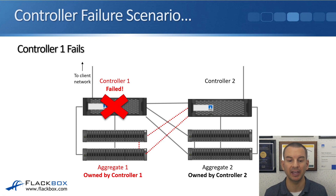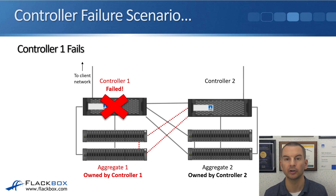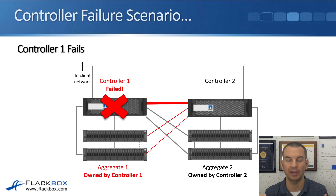Let's say we do have a failure event where controller one fails. Because it owns the disks that make up aggregate one, aggregate one is no longer available. We need controller two to take temporary ownership of aggregate one until controller one has recovered so that clients still get access to that data. Controller two can learn it has to take ownership over the HA connection if it sees missed keep-alives from controller one. It's going to wait for several missed keep-alives to make sure that controller one is definitely down before it takes ownership of its disks.